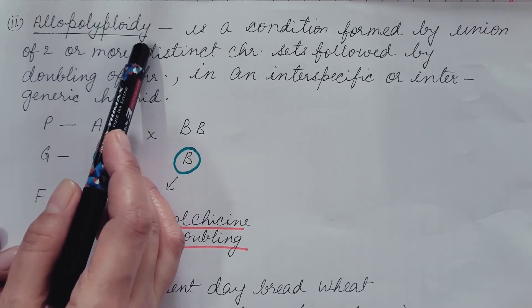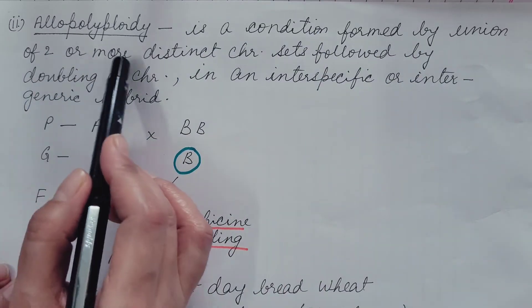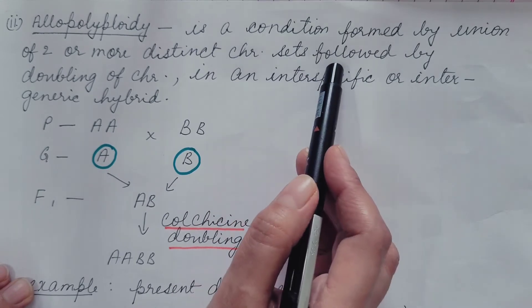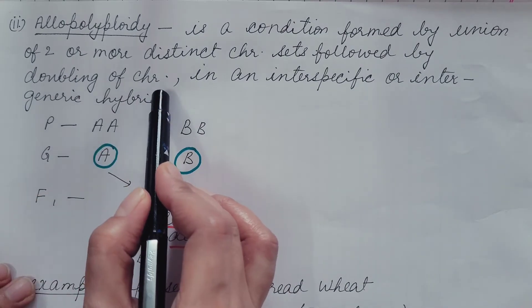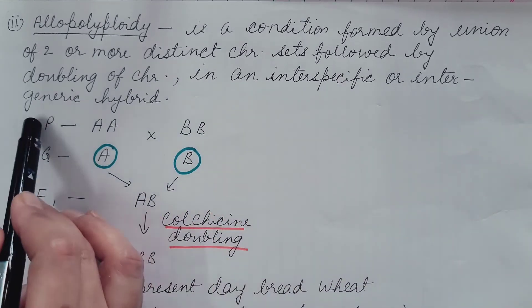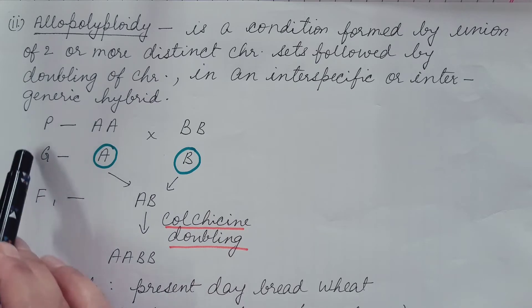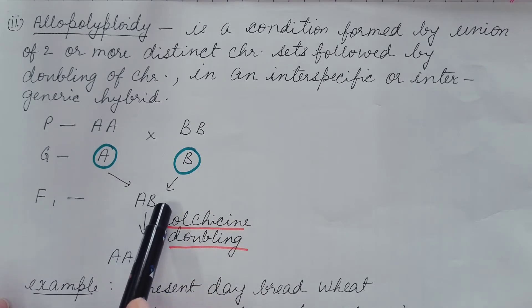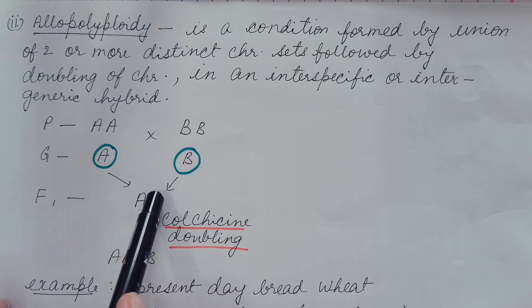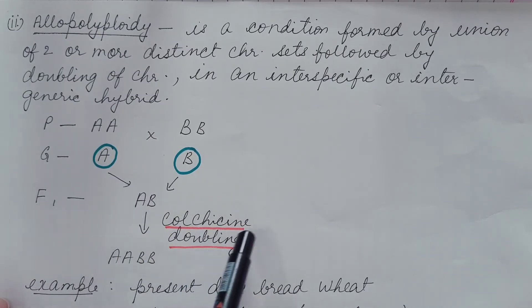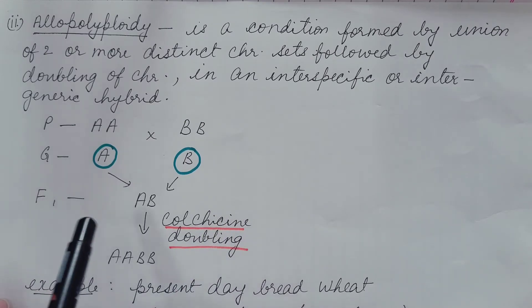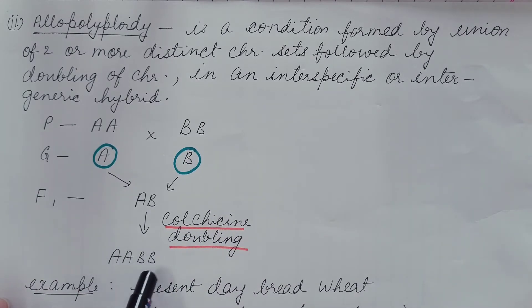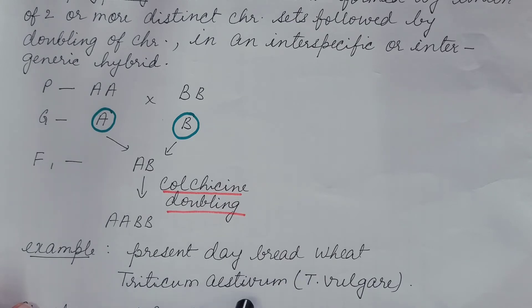Allopolyploidy is a condition formed by the union of two or more distinct chromosome sets followed by chromosome doubling, occurring in an interspecific or intergeneric hybrid. For example, parent AA is crossed with parent BB; gametes a and b produce an F1 hybrid ab. Colchicine-induced doubling gives AABB, which is allopolyploidy. A well-known example is present-day bread wheat, Triticum aestivum, developed by this method.